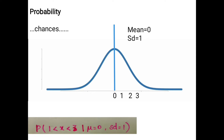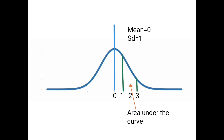Probability deals with the chances that a randomly chosen employee will have a raise percentage from 1 to 3 percent. We can mathematically describe it as P(x), where x represents the randomly chosen employee having a raise from 1 to 3 percent, given a standard deviation of 1 and a mean of 0. The result is the area under the curve. Probability is the chances of an event occurring.